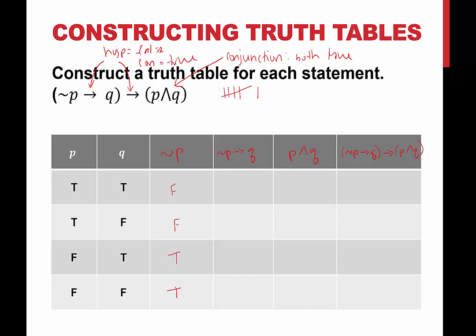Now not p implies q. Not p is the hypothesis for this column, and q is our conclusion. We have a false hypothesis implying — that's going to be a true conditional statement. A false hypothesis gives a true conditional. Next we have a true hypothesis and a true conclusion — that's true. Then a true hypothesis and a false conclusion — the conditional statement is false. For the next column, p and q: in order for the conjunction to be true, both must be true. True and true is true. True and false is false. False and true is false. False and false is false.